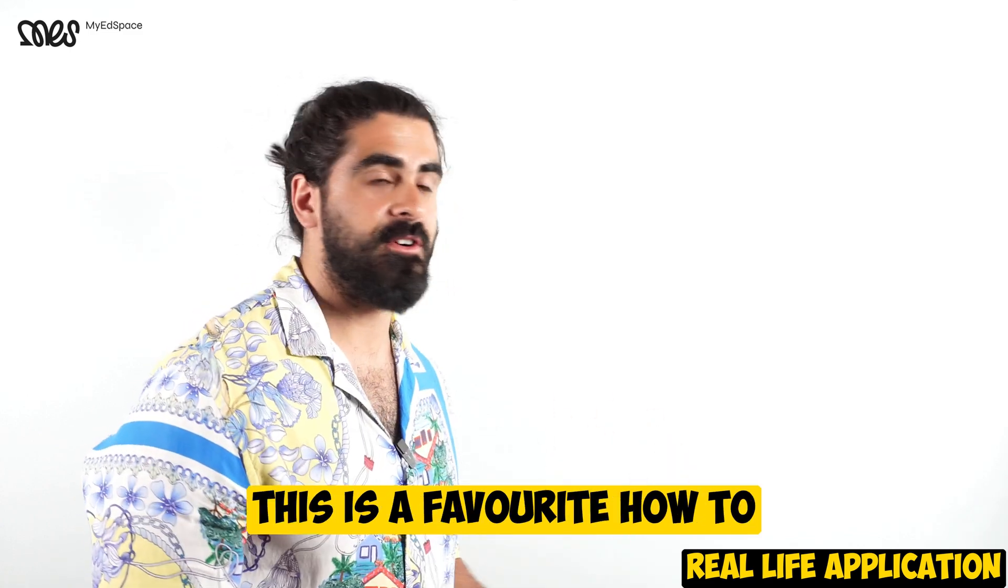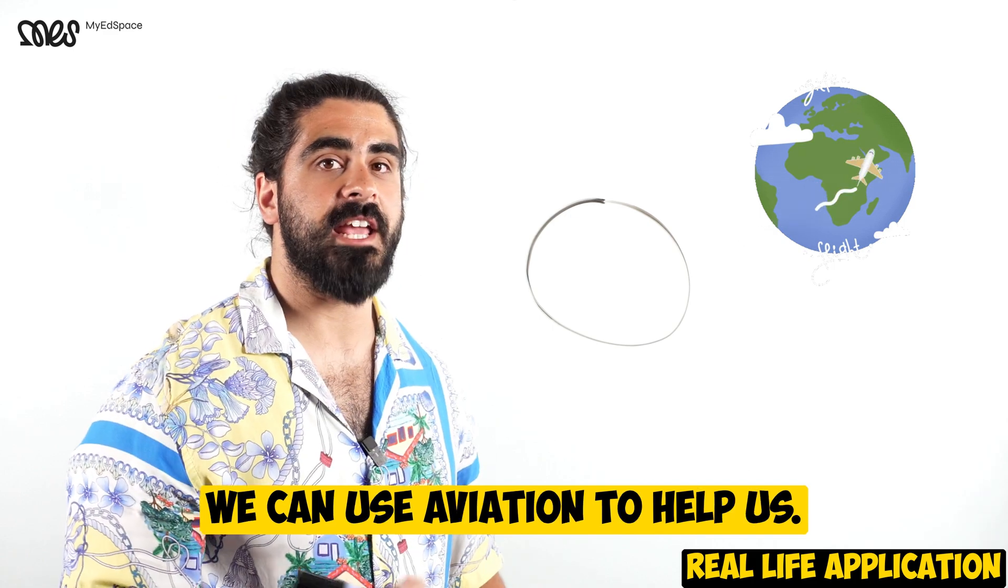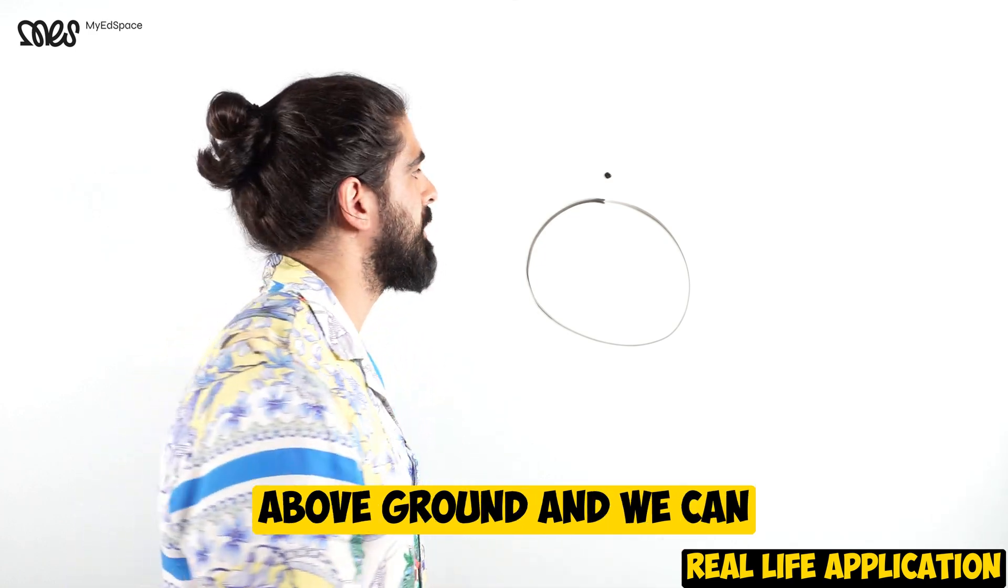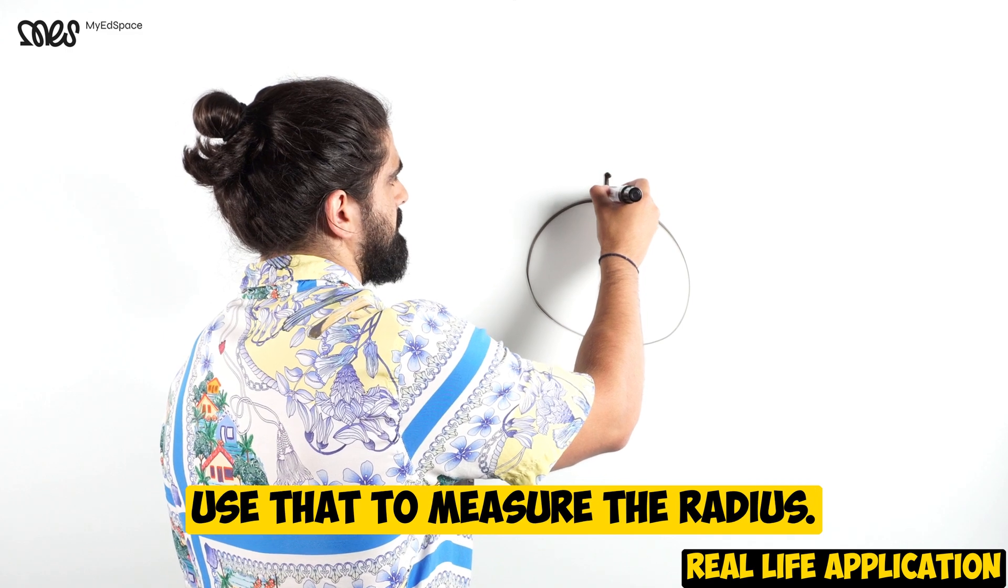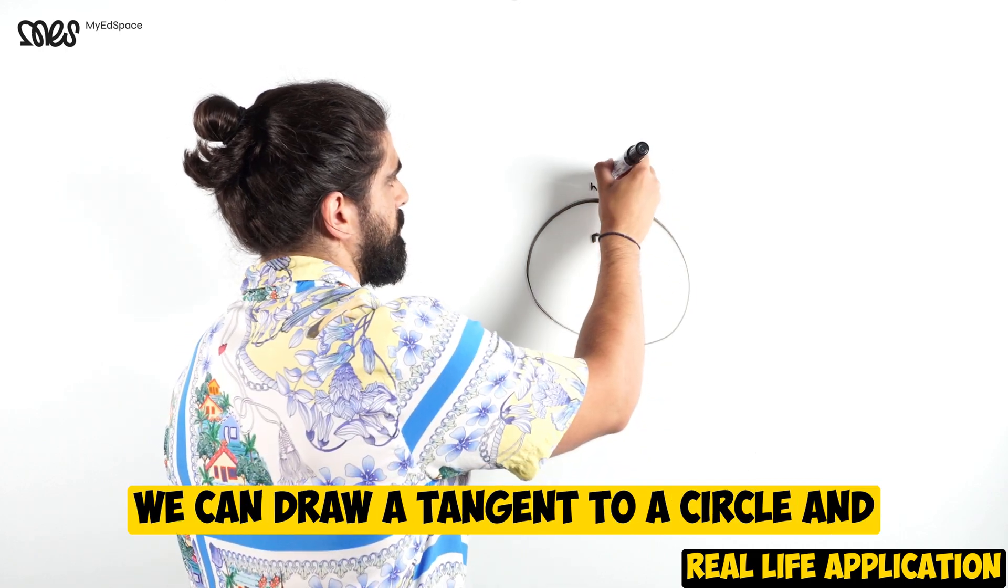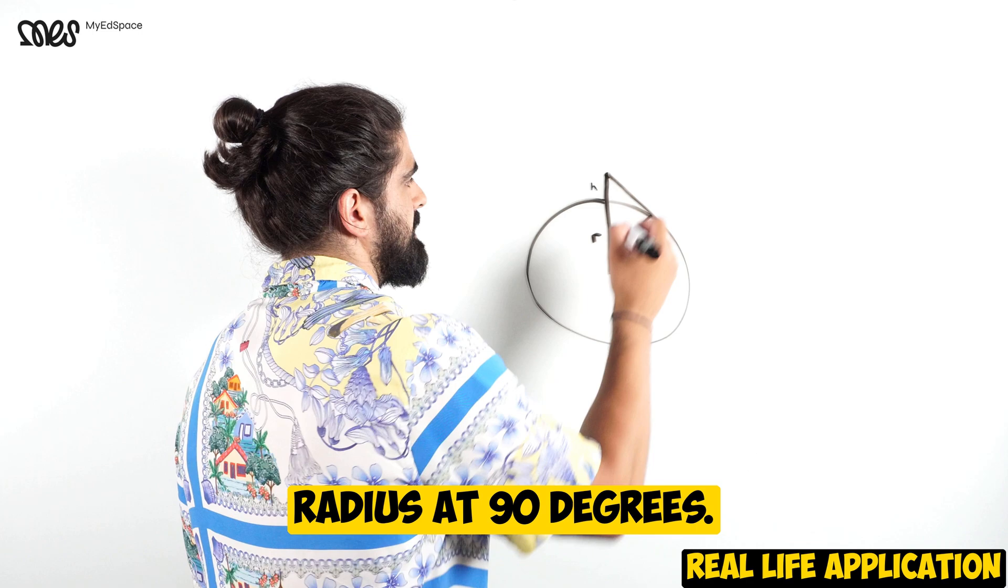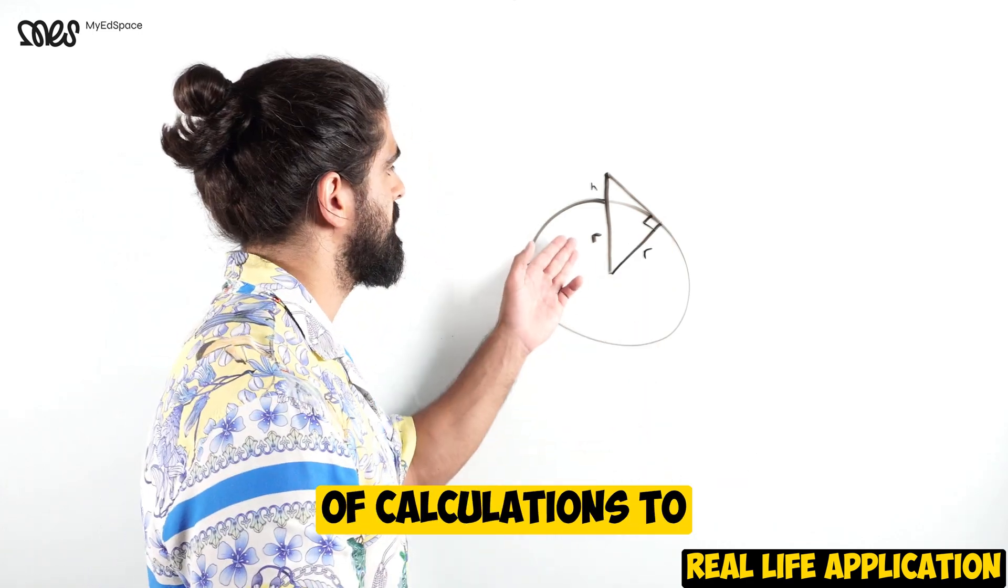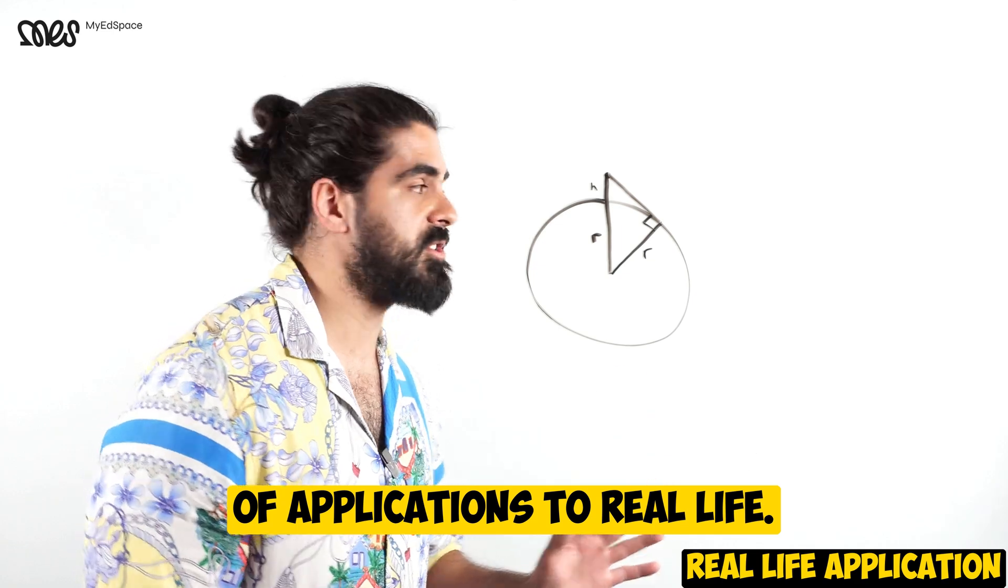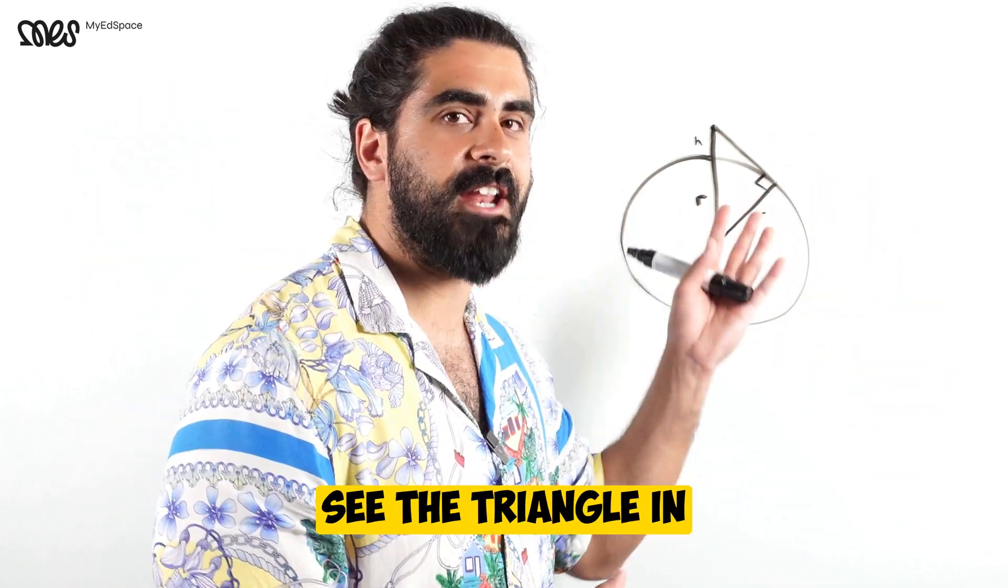We can use small angle approximations to estimate distances between objects which are really far apart. One other way we can use trigonometry is how to measure the radius of the Earth. You can take the Earth here, and we can use aviation to help us. We can take a plane flying however many meters above ground. Because we can draw a tangent to a circle, and tangents meet the radius at 90 degrees, we can do these calculations to work out the radius of the Earth. Trigonometry has tons of applications to real life.